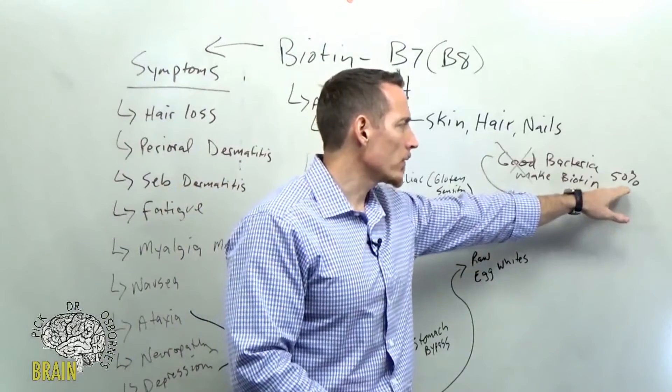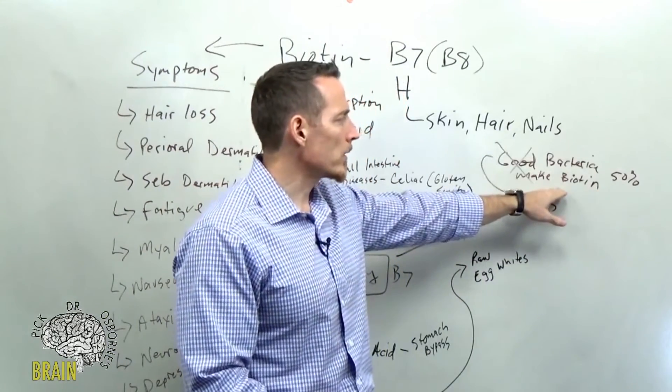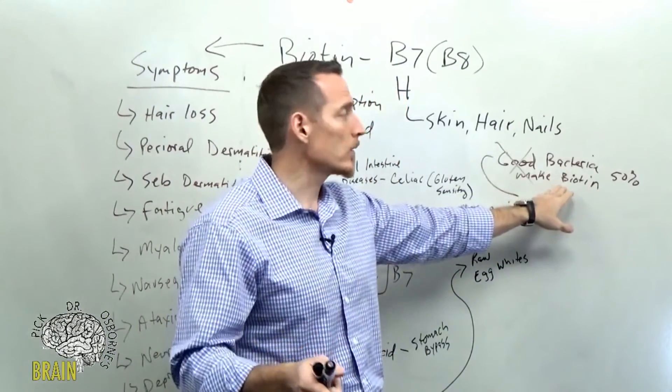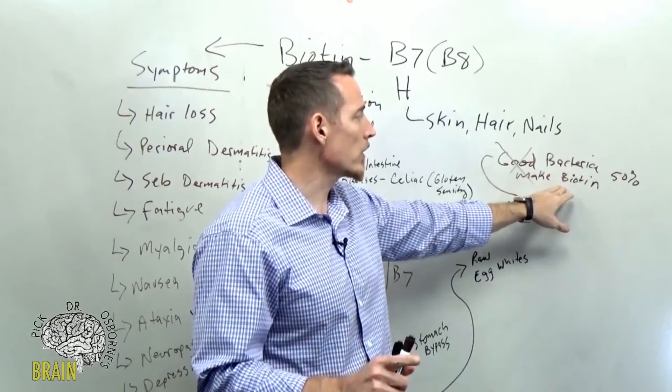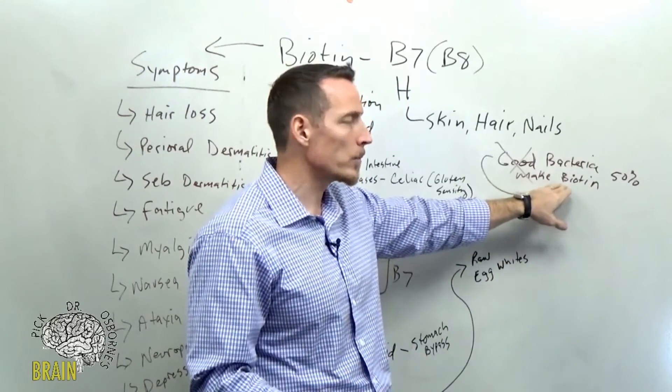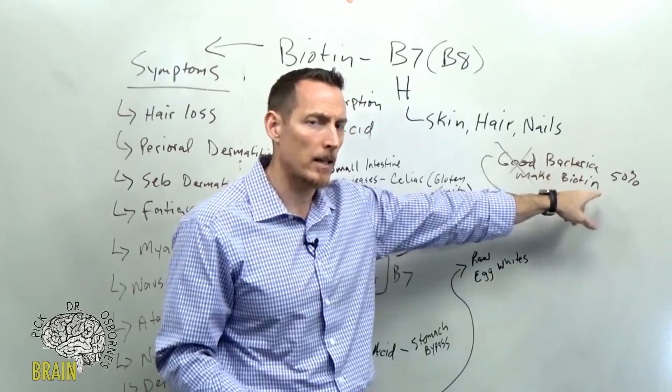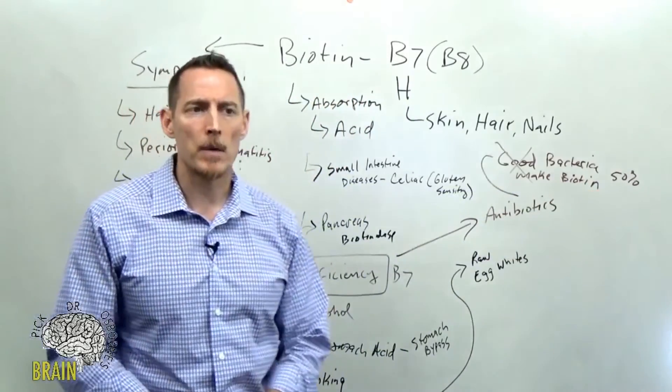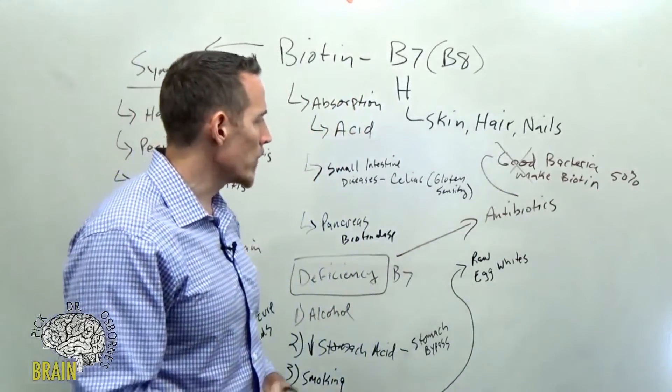And again, biotin, 50% of your biotin is produced by your good bacteria. Now we talked about vitamin K a few weeks ago, and I said that about 50, 60% of your vitamin K need comes from your good bacteria as well. So you can add vitamin K to that list if you don't remember us having that conversation. So those are the big ones.